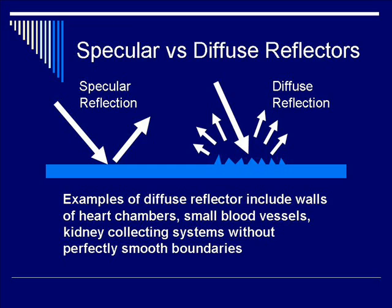Note that even though diffuse reflectors have very weak echo signals, in general the image quality is insensitive to the orientation of the reflector compared to the echo from a smooth specular reflection. Therefore, an example such as the liver will always give a very homogeneous yet speckled picture, regardless of what angle you hold the ultrasound probe against the patient's body.